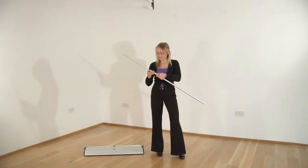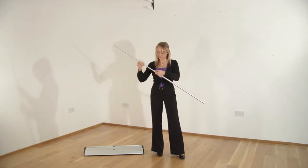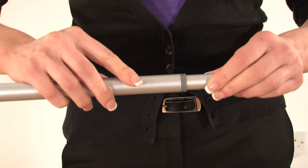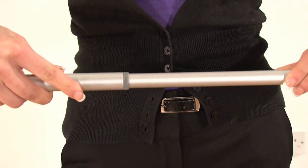Extend the widest pole section to the maximum length and twist clockwise to lock into place. The next adjustable section should be extended to the desired graphic height.